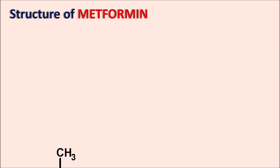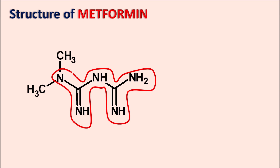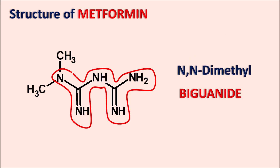The structure of metformin is relatively simple. It chemically belongs to the biguanides — a combination of two guanidine moieties. On the nitrogen, two methyl groups are present, making it NN-dimethyl biguanide. That is the basic chemical structure of metformin.